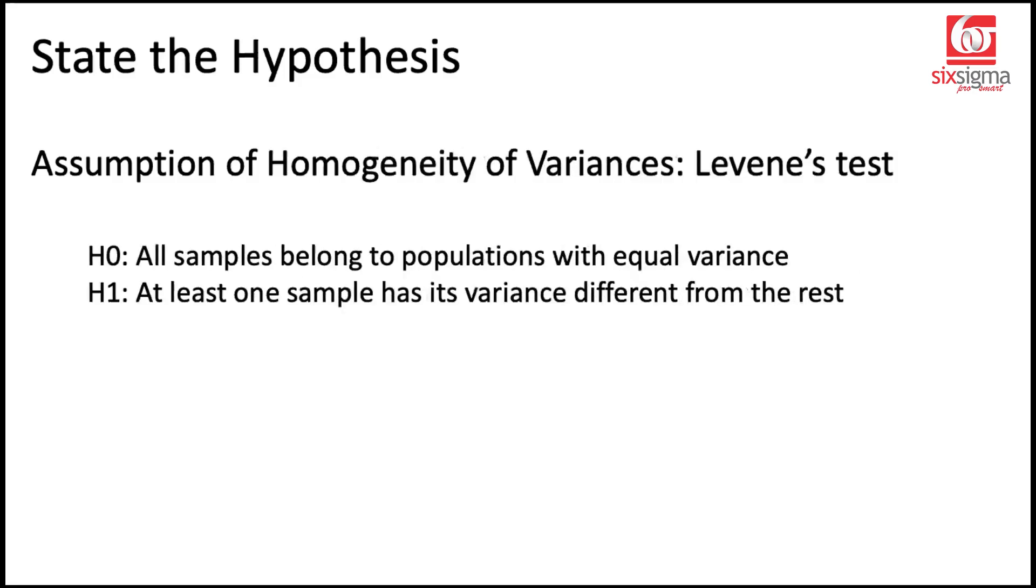Similarly for the homogeneity of variances, we have multiple tests but we'll be talking about a test that's known as the Levene's test. The null hypothesis in this case is that all samples belong to populations with equal variance. Notice that Levene's test would typically be performed when you have multiple samples or at least two samples and the alternative hypothesis in case of Levene's test is that at least one sample has its variance different from the rest.